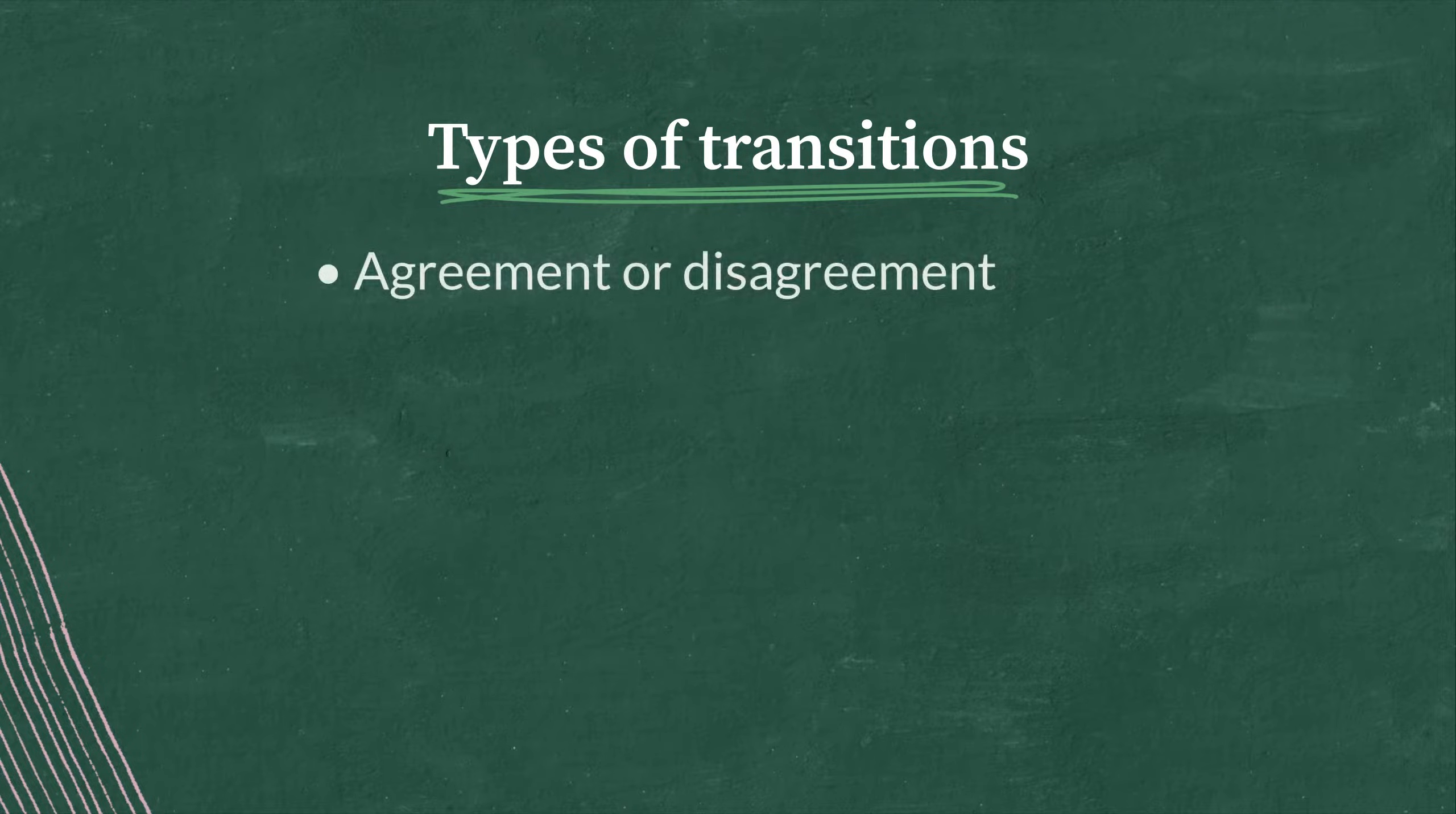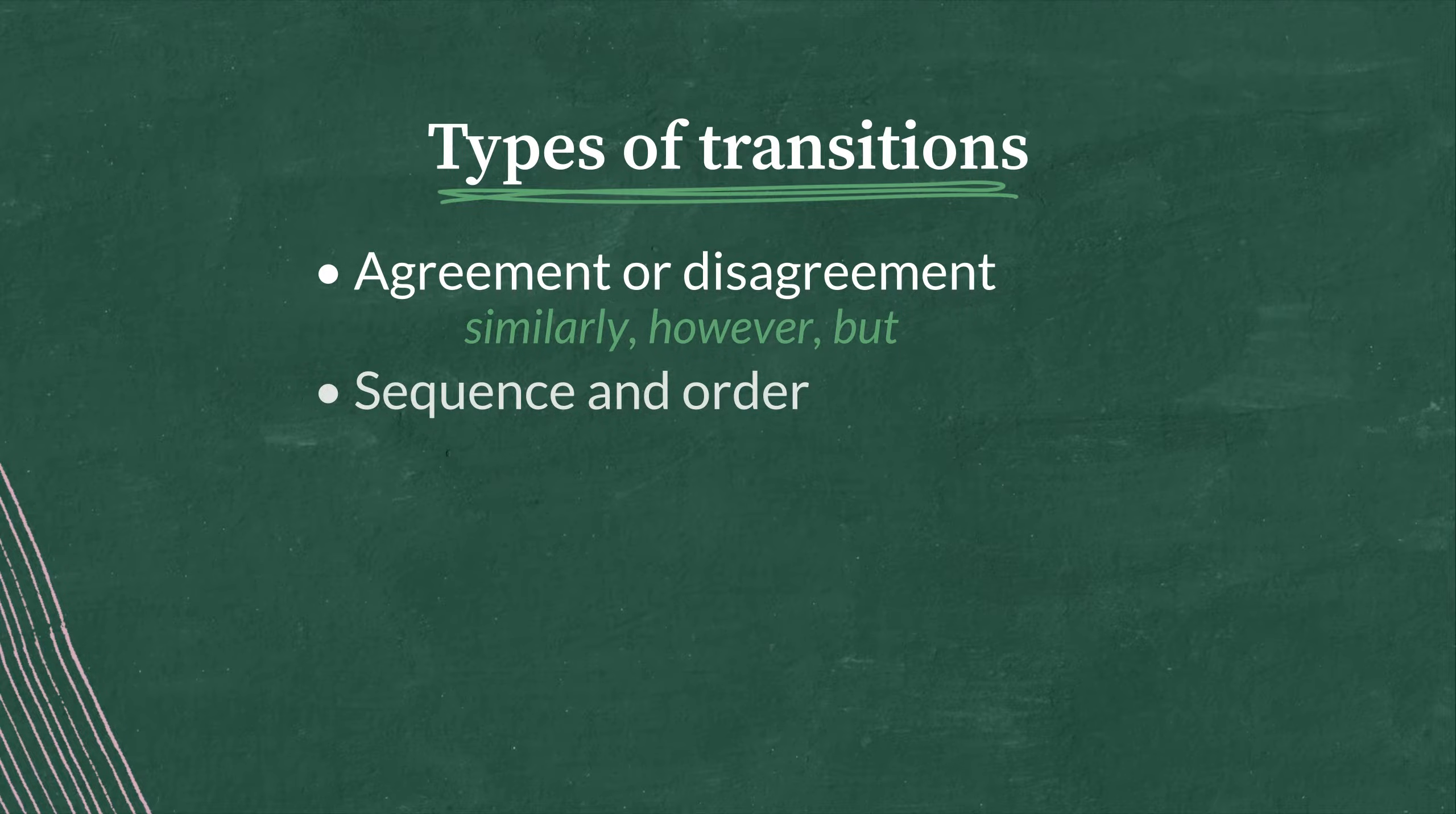They can agree or disagree with each other, which means we'd want to look for agreement words like similarly or disagreement words like however or but. They can be placed into a sequence or order, and there we're looking for words like previously, later, or subsequently.